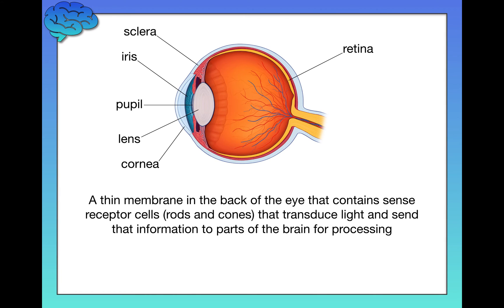Next, we have the retina, which is critical. This is where all your sense receptors are — it's a thin membrane in the back of the eye, the entire back layer where light hits. It contains sense receptors called rods and cones, which transduce light. Transduction is the process of taking a physical signal from the environment — in this case light — and turning it into electrical activity that your brain can process. These rods and cones transduce light into electrical signals and send those signals to the rest of the brain for processing, primarily in the occipital lobe.